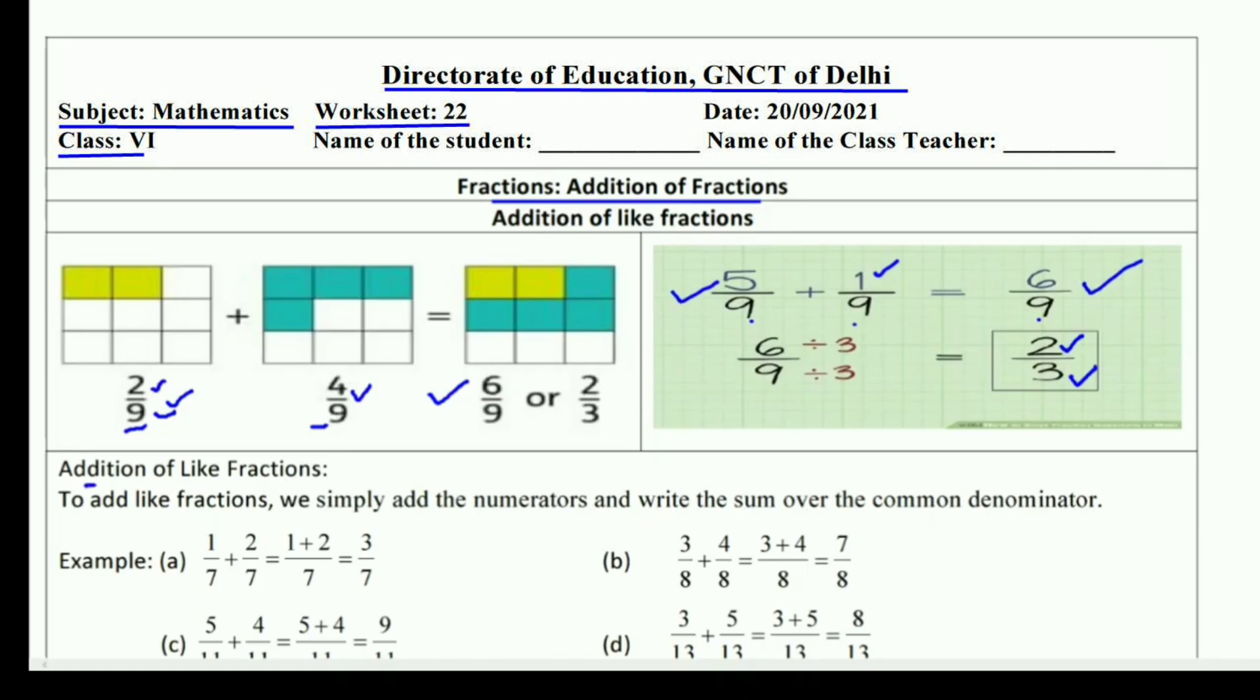Addition of like fractions: To add like fractions, we simply add the numerators and write the sum over the common denominator. Both have the same denominator, so we add only the numerators over the common denominator. For example, 1/7 plus 2/7 has the same denominator 7, and we add the numerators: 1 plus 2 equals 3, so 3/7 is the answer. Part b is 3/8 plus 4/8. Common denominator is 8, add the numerators: 3 plus 4 is 7. Answer is 7/8.